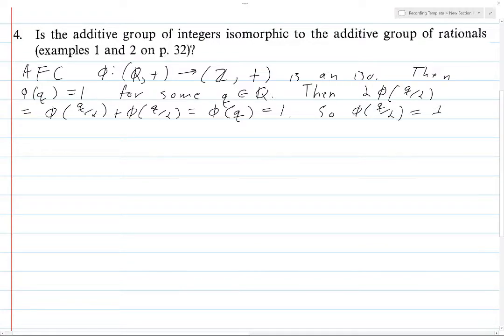It must be 1/2, but 1/2 is not in Z, and this is a contradiction. Hence there is no isomorphism between rationals and integers with respect to addition, and we're done.